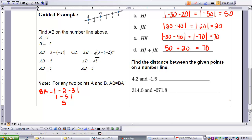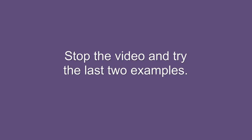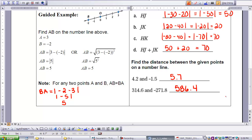Please check your answers for parts b, c, and d. Now find the distance between the given points on a number line for the last two problems. Stop the video when you're finished, then start the video again and check your answers. Here are the answers to the last two problems. This concludes video 1-1, Points and Lines as Locations.